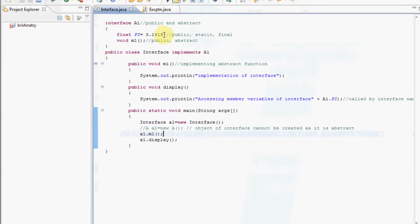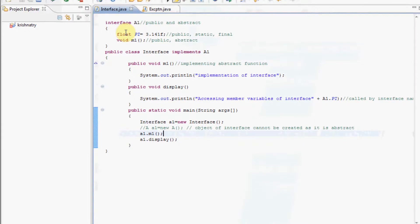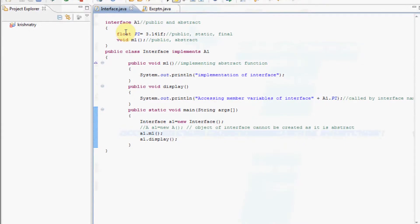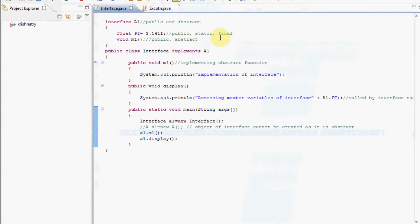We have used f because it is a float variable. Member variables of an interface are public, static and final.